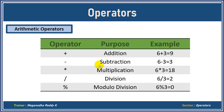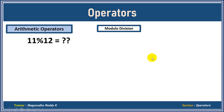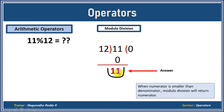Looking at the presentation: 12 modulo 5 — divide by 5, two fives are 10, remainder is 2. And for 11 modulo 12: since 12 won't go in even once, 12 times 0 is 0, remainder is 11. So when the numerator is smaller than the denominator, the modulo result is the numerator itself. We've now learned all arithmetic operators. In the next module, we are going to learn relational operators. Thank you and see you in the next module.